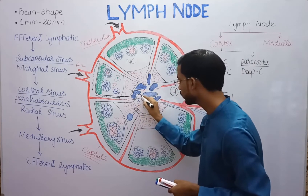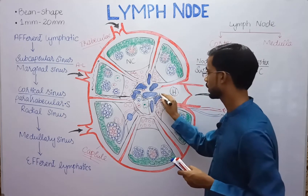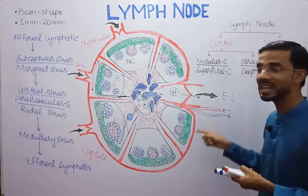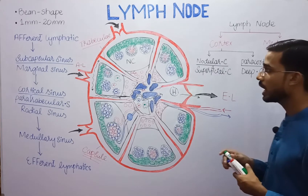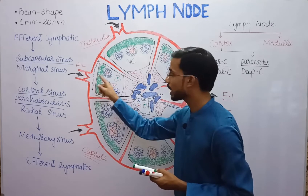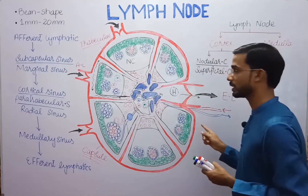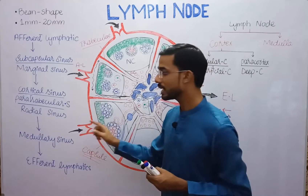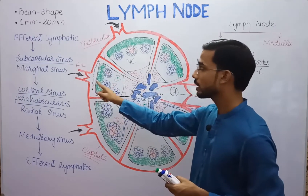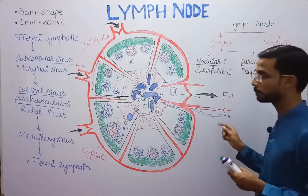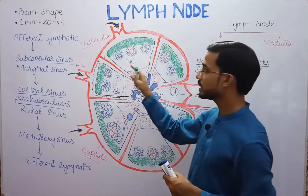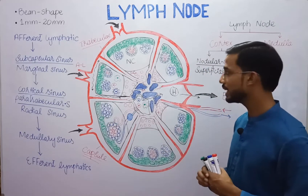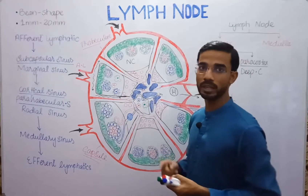Lymph flows through the medullary sinus and ultimately exits the lymph node through the efferent lymphatic vessels. You can remember this by the alphabet: 'A' comes before 'E', so afferent comes first and efferent later. Several valves are present at their junction, which are involved in the unidirectional flow of lymph.